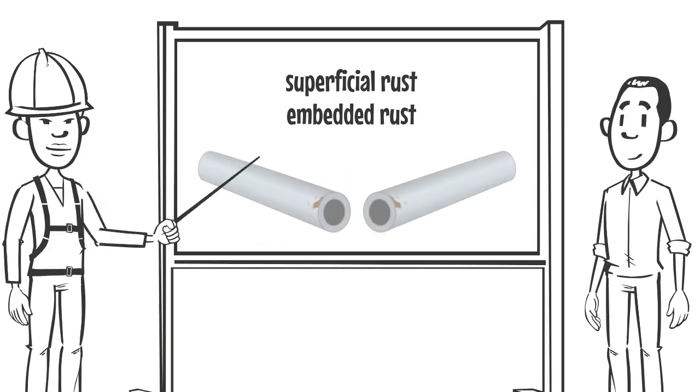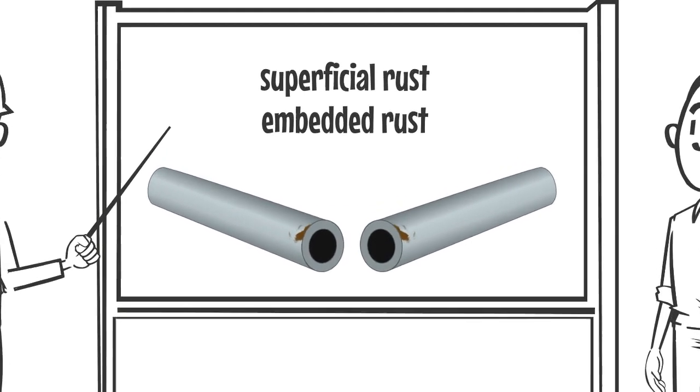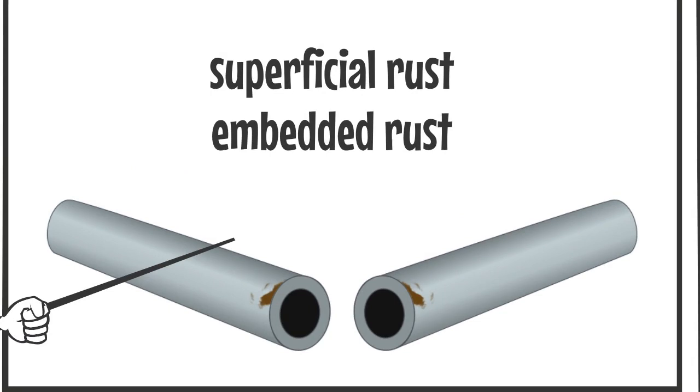Superficial rust is iron oxide deposited on the original surface of the pipe. With superficial rust, the surface of the pipe has not been disturbed and therefore the corrosion resistance has not been compromised.